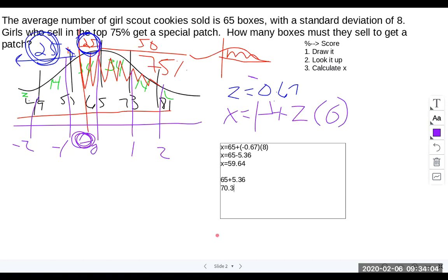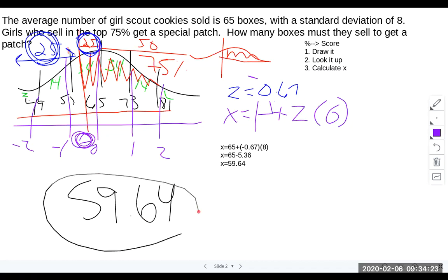So in this particular case, when we look at this, the answer that we're looking for is that the top 75% of Girl Scouts would need to sell 59.64 boxes. So just to highlight that, then our answer would be 59.64 Girl Scout cookie boxes. Okay. Thank you.